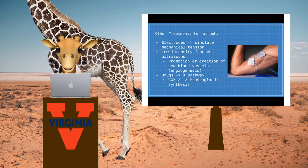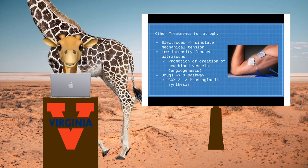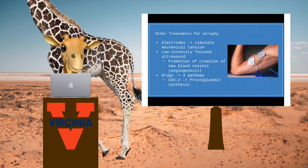Treatment options outside of electrode stimulation are currently being tested. Low intensity focused ultrasound promotes the creation of new blood vessels, which in turn bring nutrients and growth factors to atrophied muscle and promote hypertrophy.